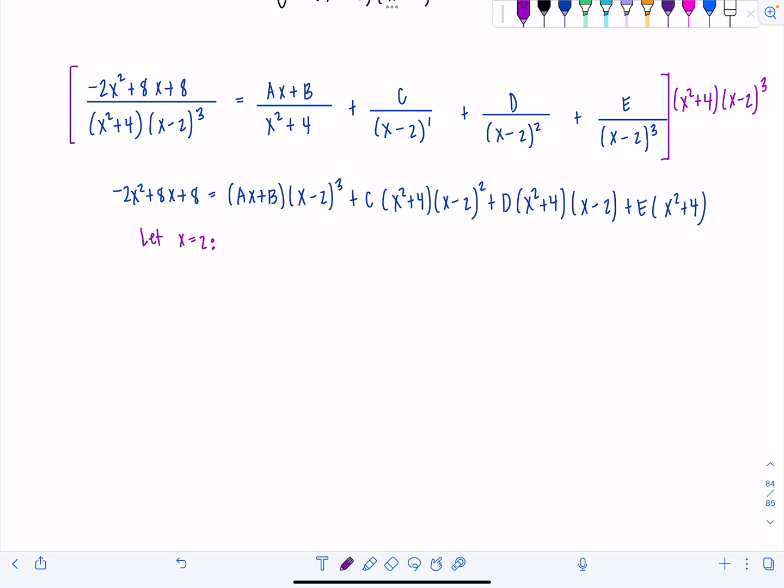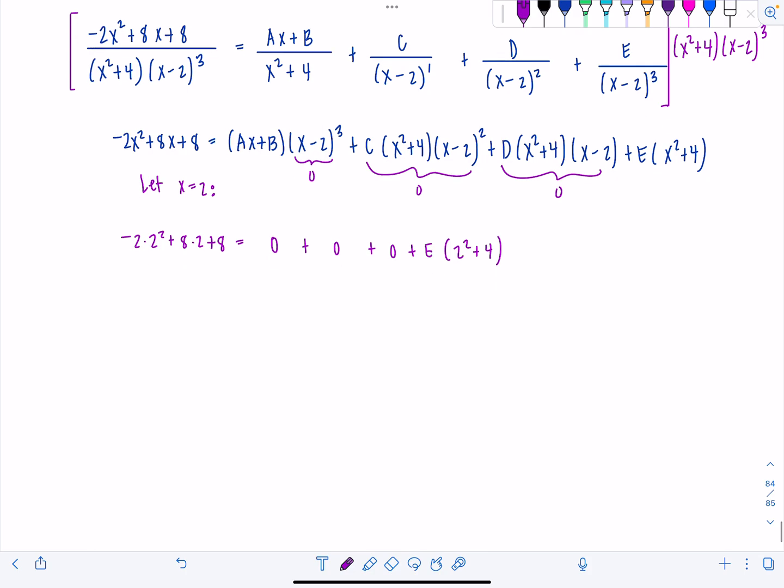So if x is equal to 2, on the left hand side, we're going to have negative 2 times 2 squared plus 8 times 2 plus 8. If I plug in a 2 for x here, that whole thing's going to just be 0, plus this whole term will be 0, this will all be 0. And then lastly, I just have e times 2 squared plus 4. You see how nicely that works out? So we have now negative 8 plus 16 plus 8 equals e times 8. These 8s cancel. 16 equals 8e. So then I know e is 2.